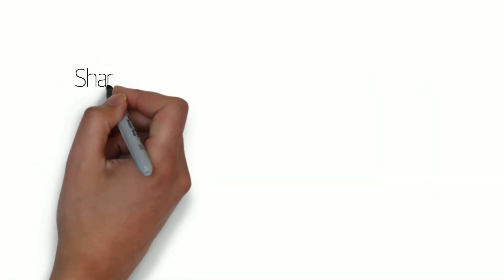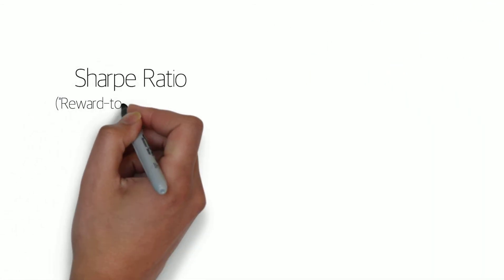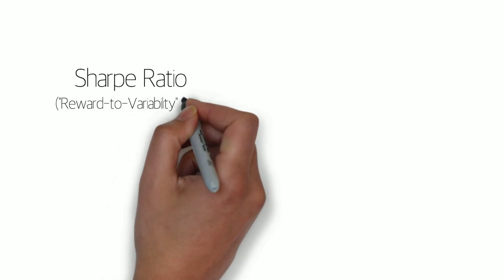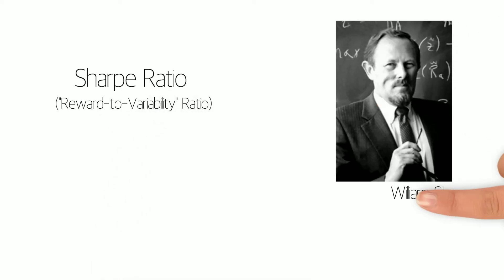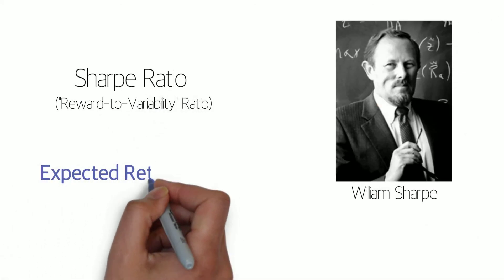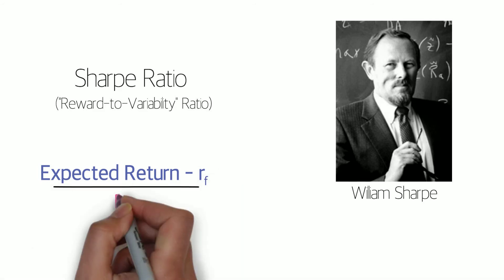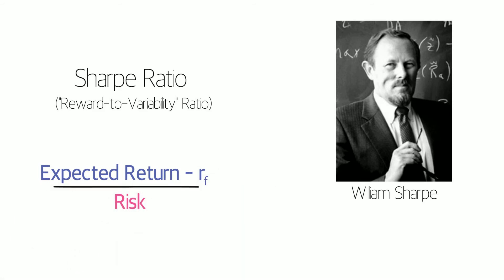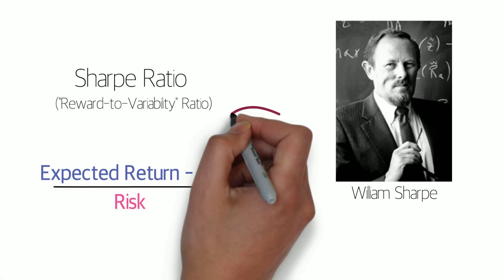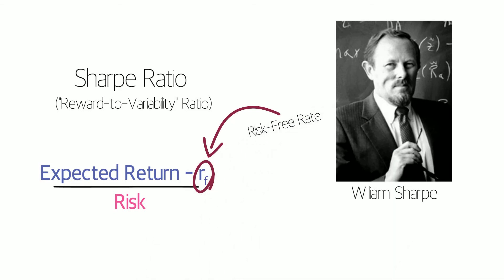The first and most well-known is the Sharpe Ratio, also known as the Reward to Variability Ratio. It is defined as expected return minus RF, or the risk-free rate, over risk. The return on a government treasury bill is typically used as a proxy for the risk-free rate.